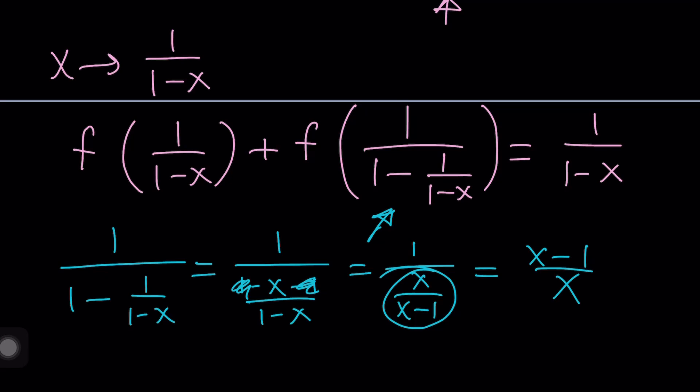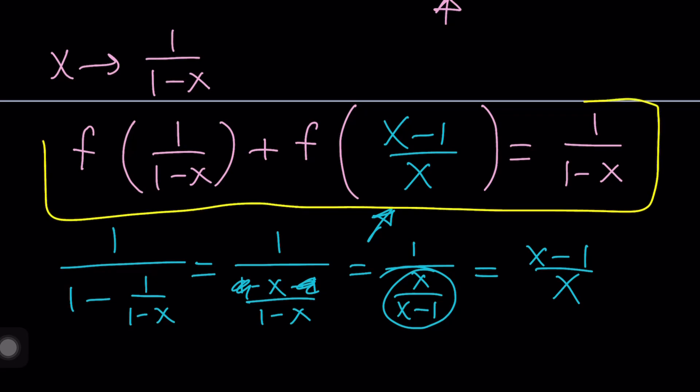So that gigantic expression inside the parentheses is now going to be x minus 1 over x. We just found out, right? Great. So that's one equation that I'm going to be using in the near future, so let me go ahead and box it real quick. And then we'll continue with the process. Now, replacing x with 1 over 1 minus x just brought another function. You can call that h of x if you want.